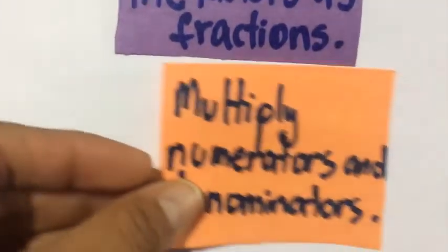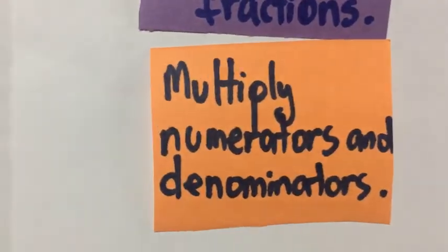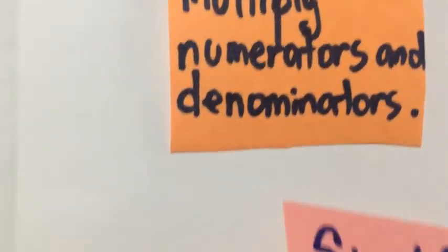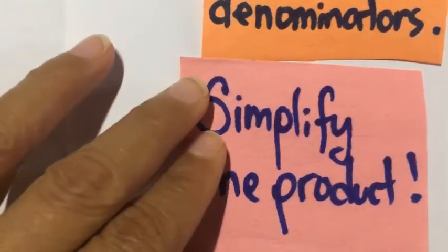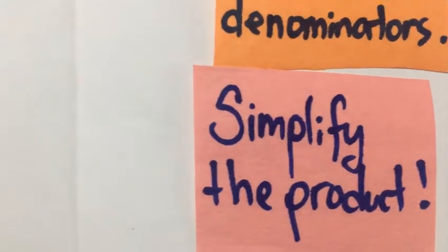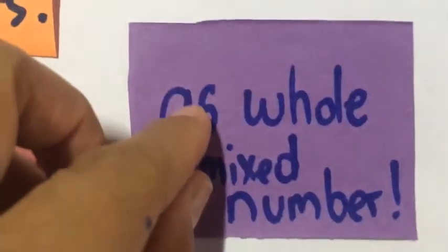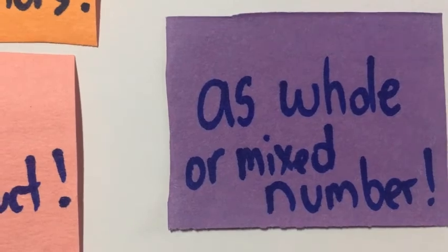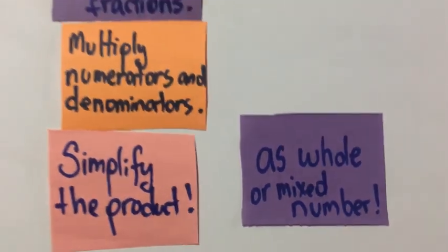Remember, for multiplication with mixed numbers you always follow the same steps: first rename the factors as fractions, then multiply numerators and denominators, and always simplify the product as a whole number or a mixed number. That's all the steps you have to do.